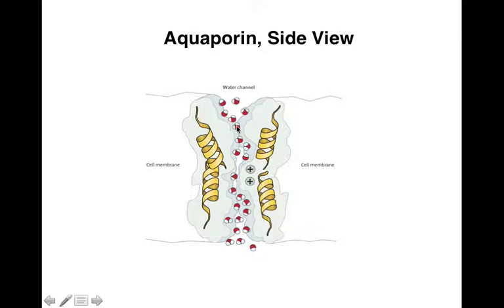In the beginning, when water flows through the channel, it has its oxygen down, so it's flowing through. Then in the middle of the channel, it reverses its direction. This is because there are positively charged residues of amino acids lining the channel, so the negatively charged oxygen is attracted to these.